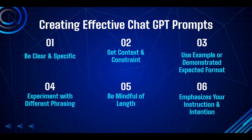The third aspect: use examples or demonstrate the expected format. Consider providing examples or demonstrating the expected format for the desired responses. This can help the model understand the structure and style you're seeking, improving the chance of generating responses that meet your expectations. If you're asking ChatGPT to generate a complex template or a script for your ad copy and you want the output to exactly match your expectations, you'll need to provide examples to show ChatGPT your expected output.